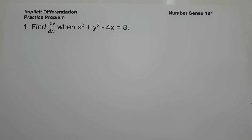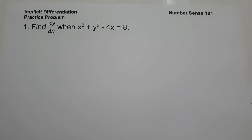For today's video, we are going to have a basic introduction of implicit differentiation, and we are going to explain everything in detail. On number 1, we are going to find dy over dx when x squared plus y cubed minus 4x equals 8. So how can we find the value of dy over dx in this equation?